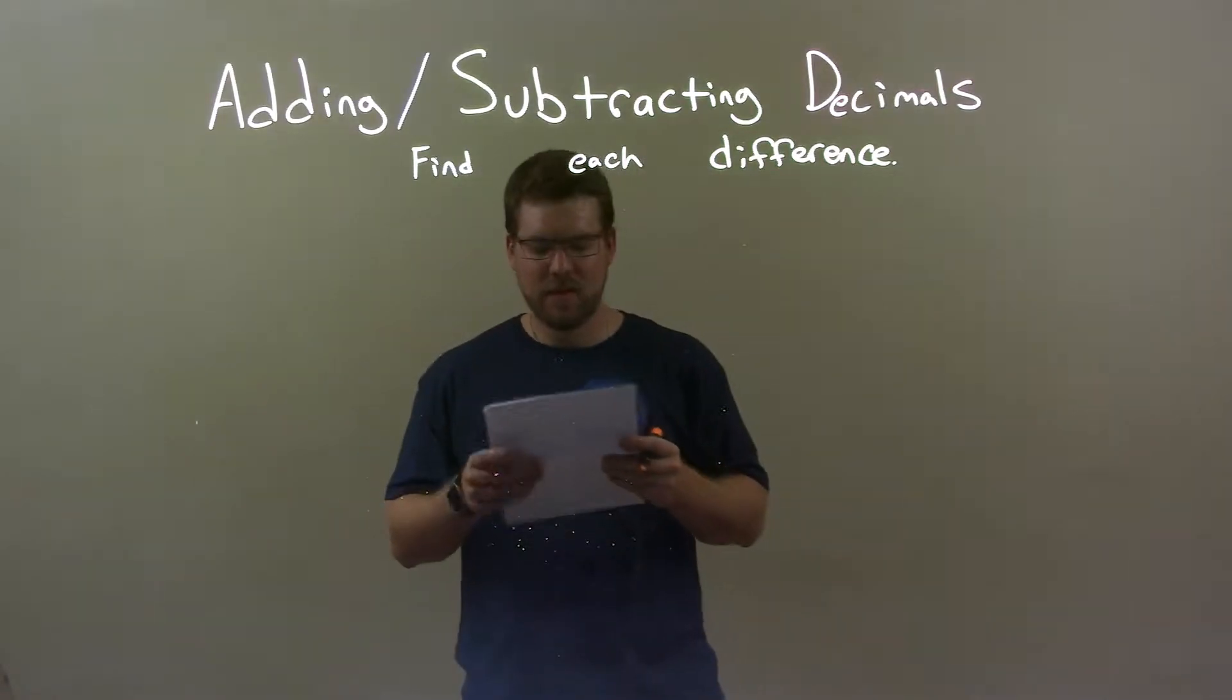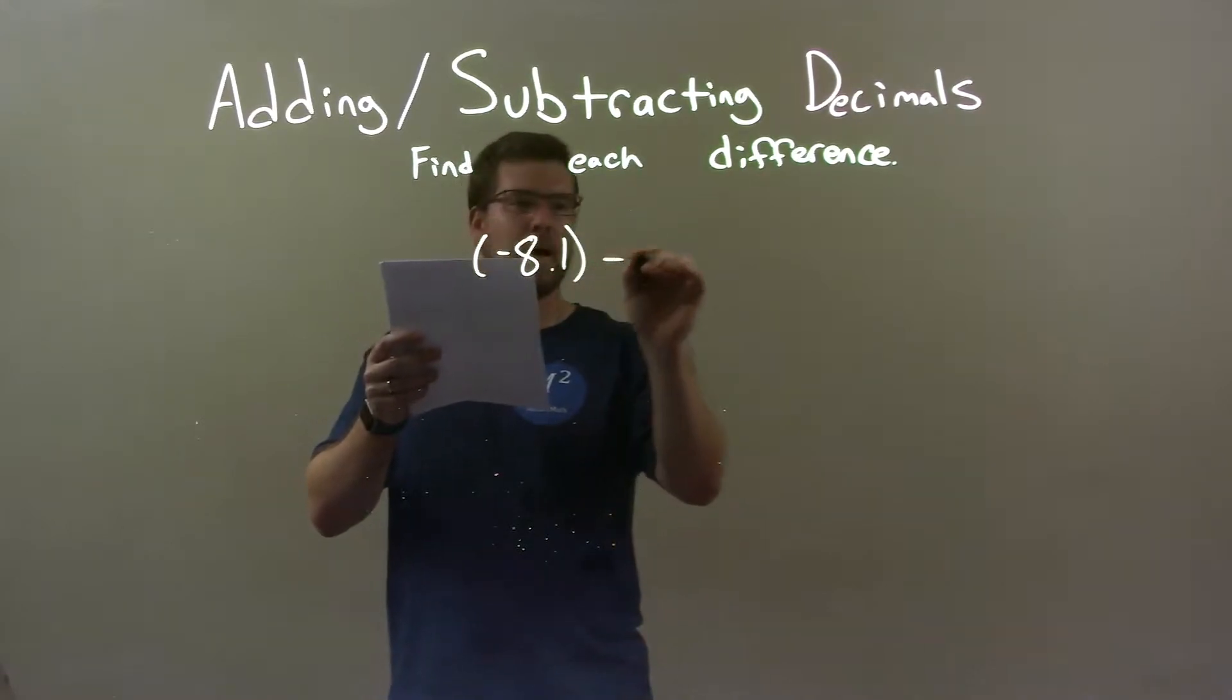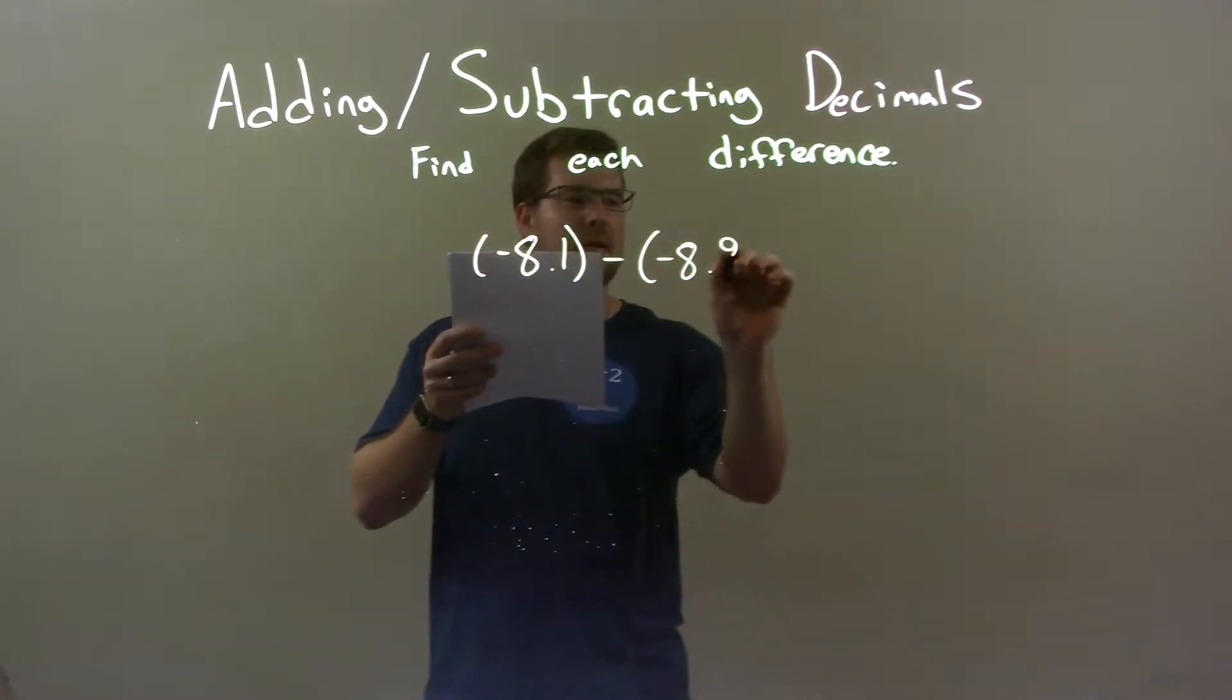So if I was given these decimals, negative 8.1 minus negative 8.9.